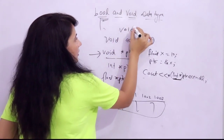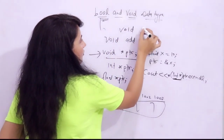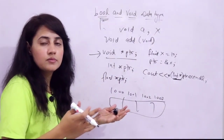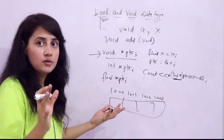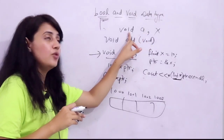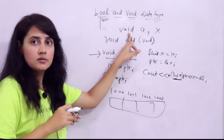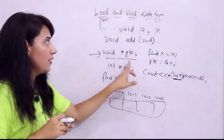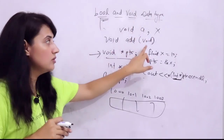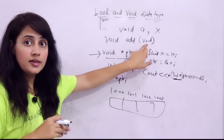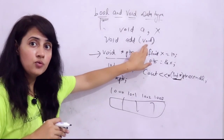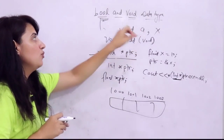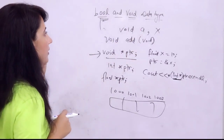You cannot declare a variable of void data type - for example, void a; is incorrect because void is nothing and no memory would be allocated. To summarize: void can be used as a function return type, as a void parameter list meaning no arguments, and as a void pointer. But you cannot declare a regular variable of void data type.